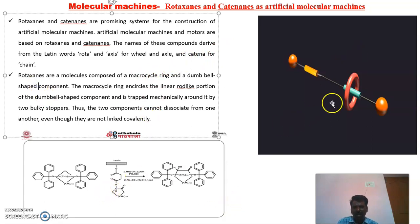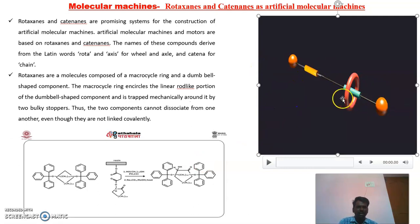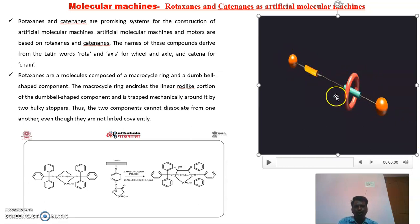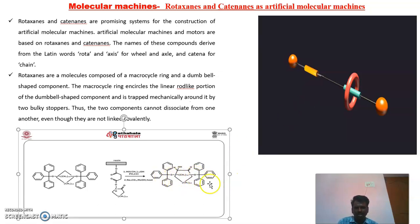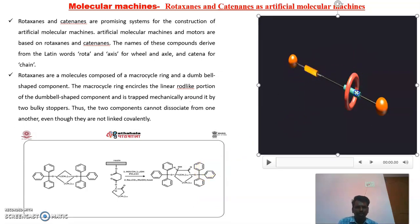We can compare these rotaxanes here. Two dumbbells are at the corners of a rod, and one macromolecular chain is placed between these two dumbbells. The two dumbbells do not allow the chain to go out, so the chain is always locked between the two dumbbells. This is called a rotaxane. In the chemical structure shown here, this dumbbell is made up of a triphenyl group, and the macromolecule acts as the chain. Between the two dumbbells there is an oxygen atom on each side.